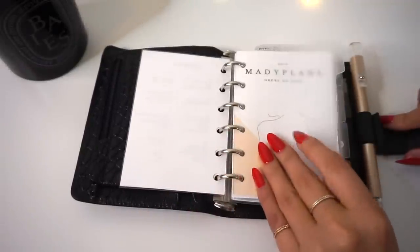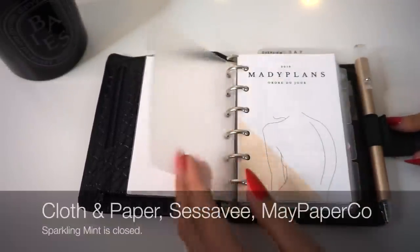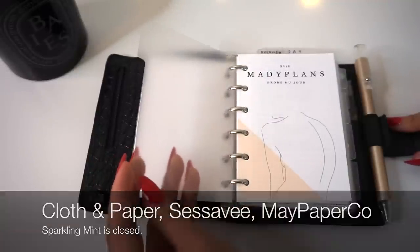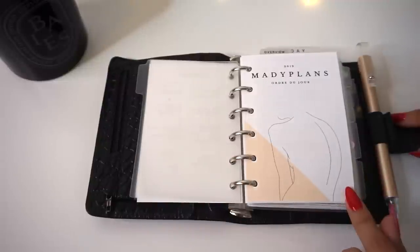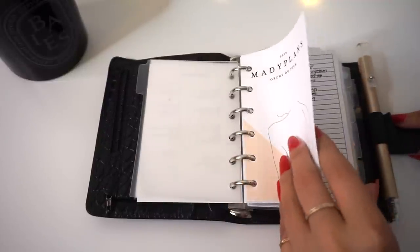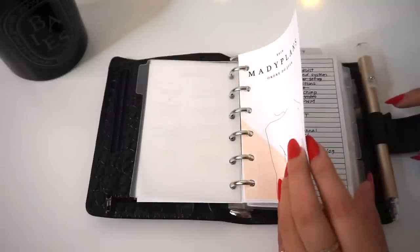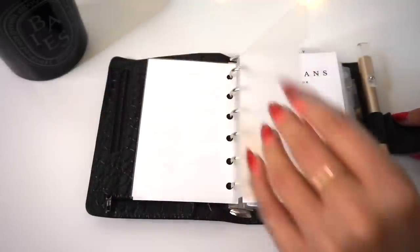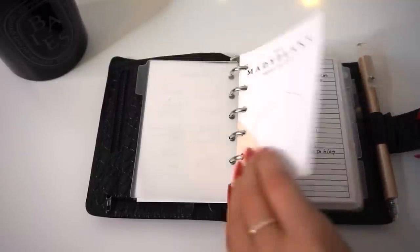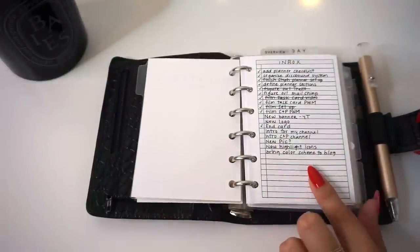Then my first divider, again these are from Sparkling Mint but you can also purchase these dividers from a ton of other shops now. I have a little cover page just leading me into my inbox because I like it to be covered. I don't really want to see all the things I have to do immediately when I turn to this first divider.